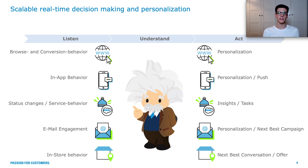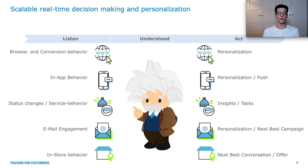You can deliver an individualized experience on the web channel and within apps. You can also present information to your sales and service reps that is specific to your customers' needs. What's also possible is personalizing marketing communication with next best promotions and next best campaigns. And to reach the offline channel, you can present that data to your sales reps at point-of-sale systems — showing them the next best campaigns, the next best offers to present, and the best conversations they can have with your customers.